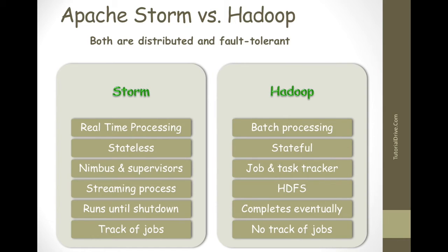In the case of Storm, if Nimbus or Supervisor goes down, restarting Storm makes it continue from where it stopped and nothing is affected. But in the case of Hadoop, if the Job Tracker dies, all running jobs are lost. The common things between Apache Storm and Hadoop are that both are distributed and fault-tolerant.